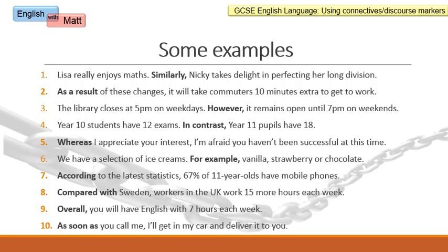Finally, let's look at 10 examples. I've put the connective in bold in 10 hypothetical sentences you might write one day. I'm not going to go through all of these — you can read them — but let's look at number four: 'Year 10 students have 12 exams. In contrast, year 11 pupils have 18.' So you're expressing a difference there. Number six is specifying an example — what flavours of ice cream you actually have. In number nine, you're concluding by using the word 'overall.' And in number one, we've got the connective 'similarly,' suggesting two people really enjoy their maths lessons.